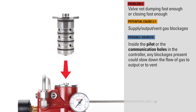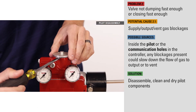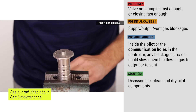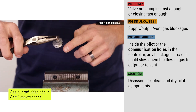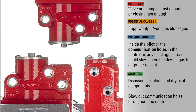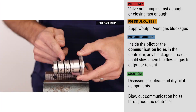Inside the pilot or the communication holes in the controller, any blockages present could slow down the flow of gas to output or vent, keeping the valve from opening or closing as fast as it should. To check for contaminants, remove the pilot from the controller and disassemble. Check for any solids or moisture. Blow out the supply, output, and vent communication holes throughout the controller to ensure they are clear. Clean and dry the pilot components before reassembling.